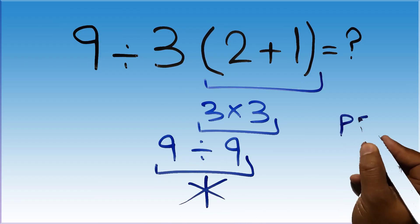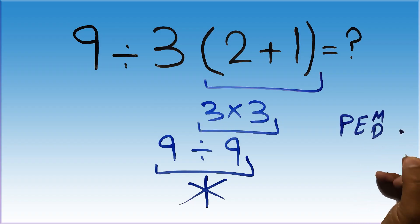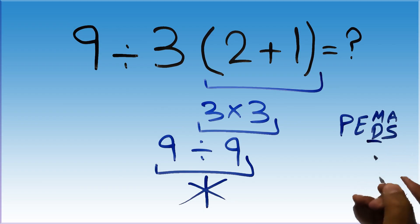have to do parentheses, then exponents, then multiplication or division, and finally addition or subtraction. Remember that multiplication and division have equal priority and we have to do it from left to right, and the same applies to addition and subtraction. In